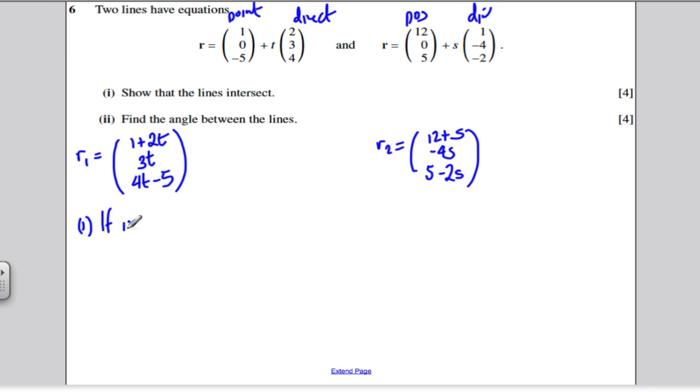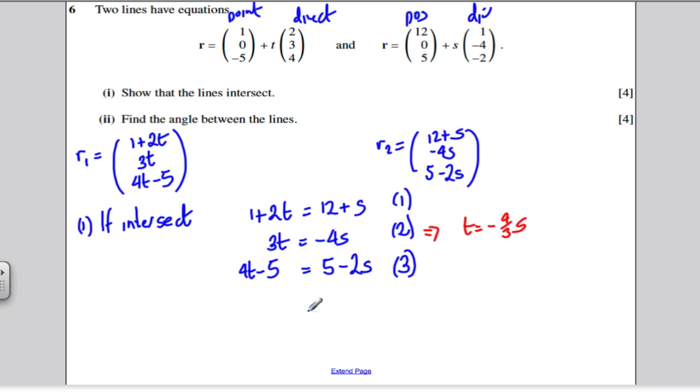So, if intersect, you can write the following equations must be true. 1 plus 2T must equal 12 plus S. 3T must equal minus 4S, and 4T minus 5 must equal 5 minus 2S. There's equation 1, equation 2, and equation 3. Now we've got three equations. From this equation, we can say that T is minus 4 thirds S, dividing both sides by 3. And I'm going to call that equation 4. I'm going to put 4 into 1.